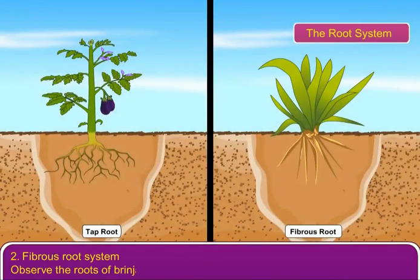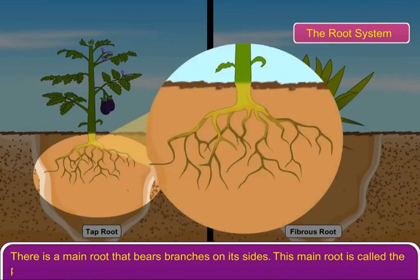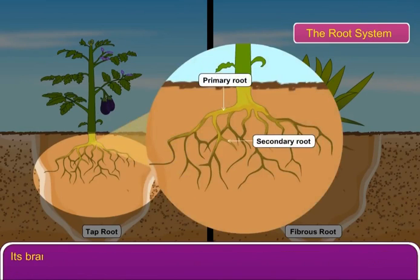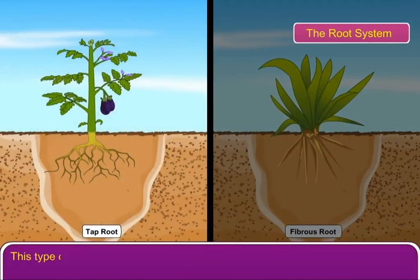Observe the roots of a brinjal plant. There is a main root that bears branches on its sides. This main root is called the primary root. Its branches on the sides are called secondary roots and tertiary roots. This type of root system is known as tap root system.